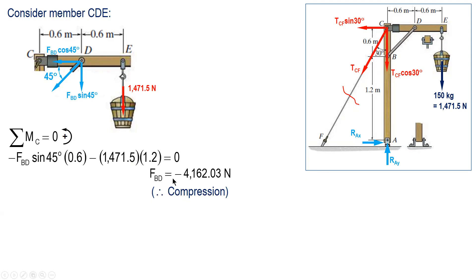So we now have the force and given diameter at D of 10 mm, then we can solve for the average shear stress. Again, the pin at D is in double shear, so the area will be multiplied by 2. So solving this one, the average shear stress at D is 26.5 MPa.